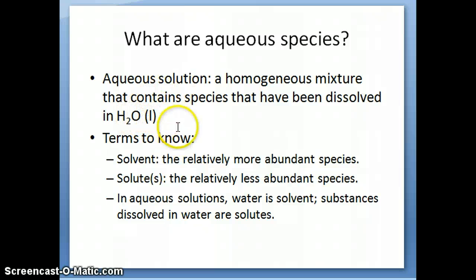There are several terms that you need to know to understand the discussion. One is the term solvent, which refers to the species that's relatively more abundant in the mixture, in the solution. And a solute is the species that's relatively less abundant, so the one that's present in smaller amount, a smaller concentration.